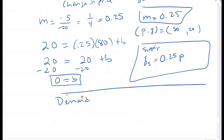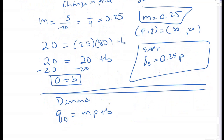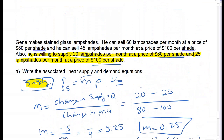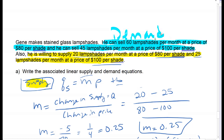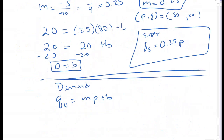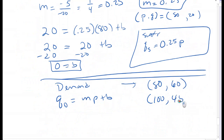Now for demand—same equation, just a different point of view and a different set of values. Demand goes with the first piece of data: he can sell 60 lampshades at a price of $80, and he can sell 45 lampshades at a price of $100. So my demand points are: price $80 with demand 60, and price $100 with demand 45.